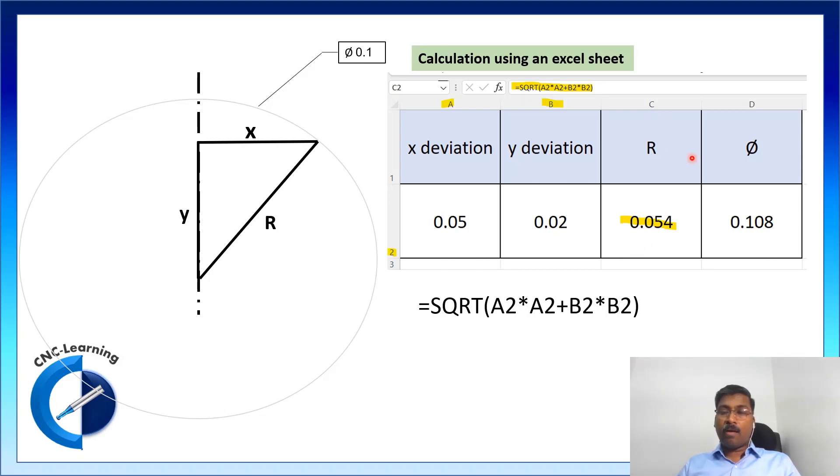And r will be calculated by this formula, square root and bracket of a2 multiplied by a2, that is nothing but a2 square plus b2 square. And that will give you the result of this two x and y deviations. And this value multiplied by 2, you will get the diametrical variation.